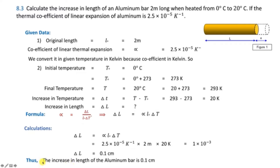Using the formula: alpha = ΔL / (L₀ × ΔT), so ΔL = alpha × L₀ × ΔT. Applying the values: alpha = 2.5 × 10⁻⁵, length L₀ = 2 m, and change in temperature ΔT = 20 K.